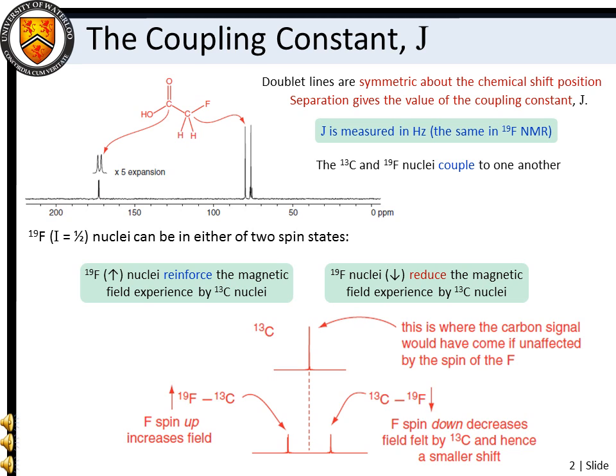The effective magnetic field experienced by a nucleus also depends on its local magnetic environment. If the nucleus of interest is adjacent to another nuclear magnetic moment, this adjacent magnetic environment can influence the effective magnetic field. For example, consider the proton-decoupled carbon-13 NMR spectrum of fluoroacetic acid. The I equals one-half fluorine nuclear magnetic moment can either be aligned with the applied magnetic field or against the applied magnetic field. If aligned with, the fluorine nucleus slightly reinforces the applied field.